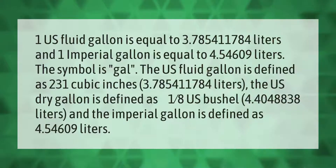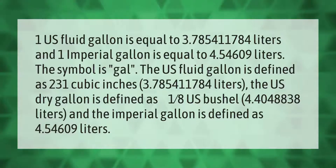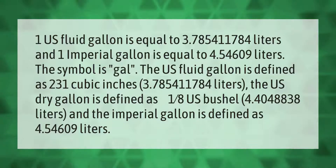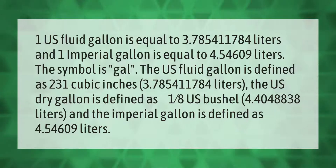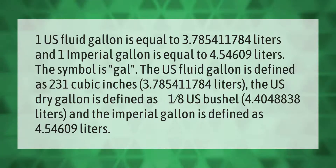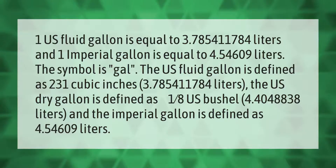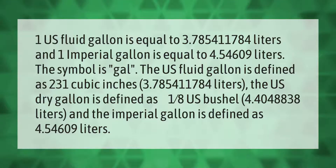One U.S. fluid gallon is equal to 3.785411784 liters, and one imperial gallon is equal to 4.54609 liters. The symbol is gal. The U.S. fluid gallon is defined as 231 cubic inches, or 3.785411784 liters.